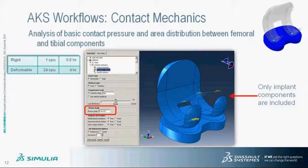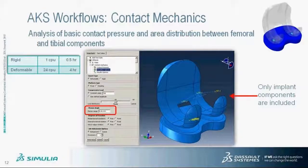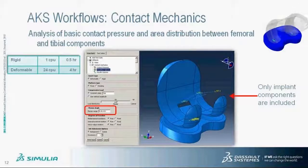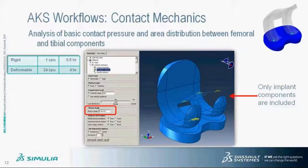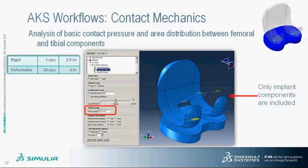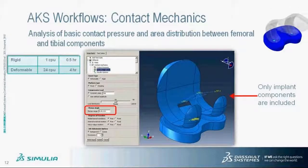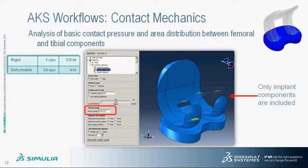During the analysis, a compressive load is applied on the femur component. The value can be either constant throughout the analysis step or varied using an amplitude curve. The distribution between the medial and lateral side can be specified using a slider bar. The femur component is flexed to a user-specified flexion angle. The user specifies the beginning flexion angle, end flexion angle, and output increment. For example, flexion from zero to 120 degrees with output at 30, 60, 90, and 120 degrees.